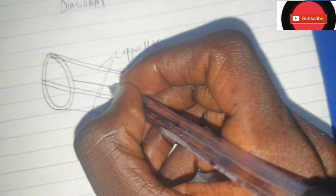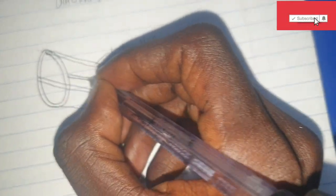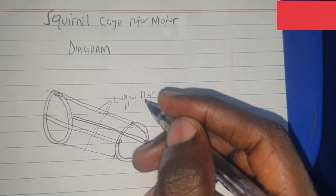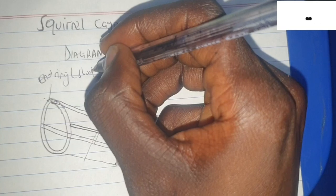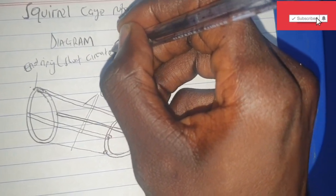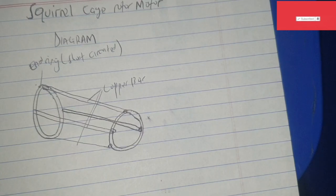So this is also a copper bar at the back as you can see it. Yeah, so this is what we call the end ring. So we know for the squirrel cage rotor, this end ring has an end ring.